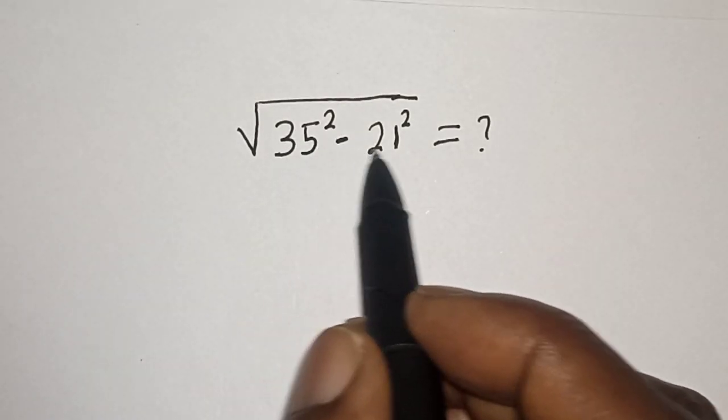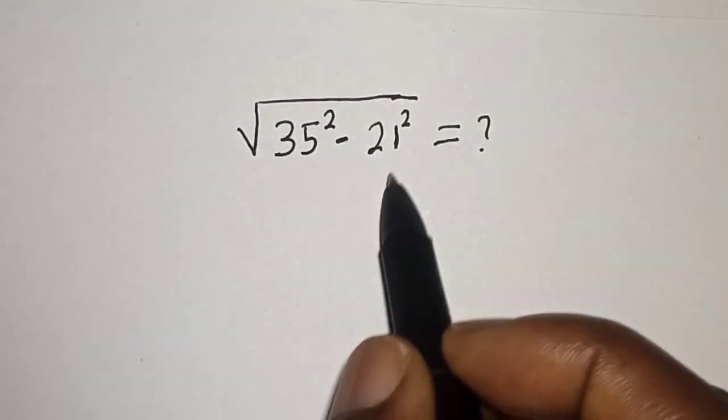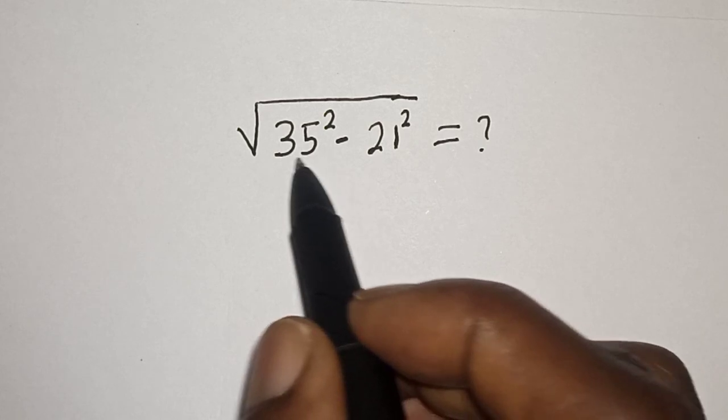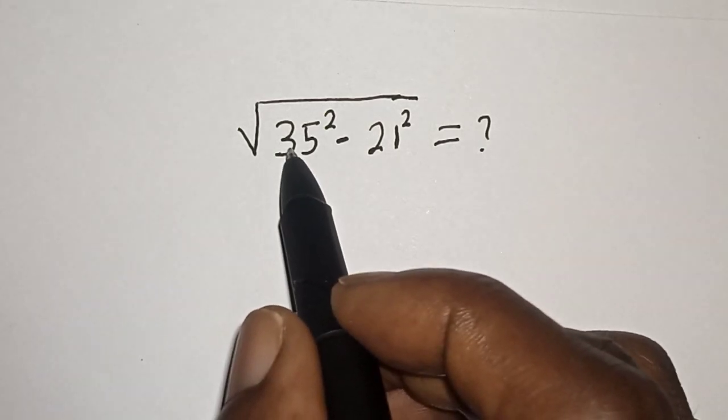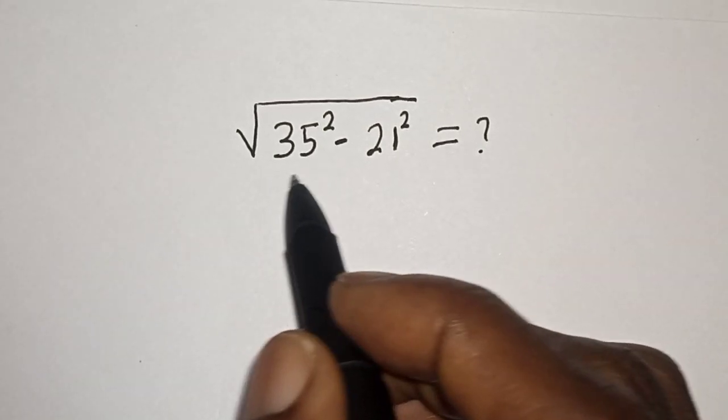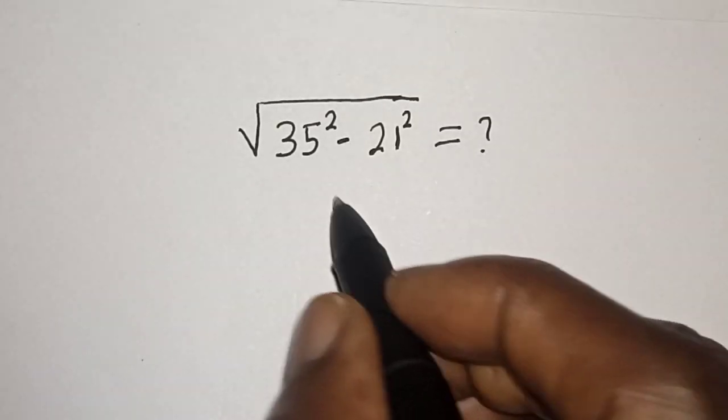Square root of 35 squared minus 21 squared is equal to what? Hi everyone, welcome to my class. In this class we quickly want to simplify this nice math problem, but before we proceed please don't forget to like, share, comment, and subscribe.